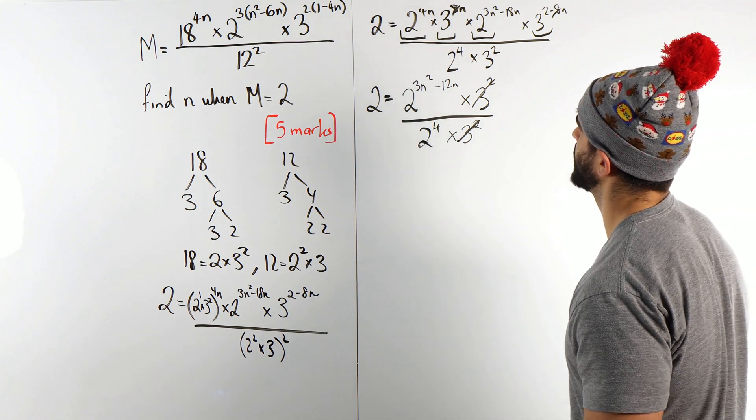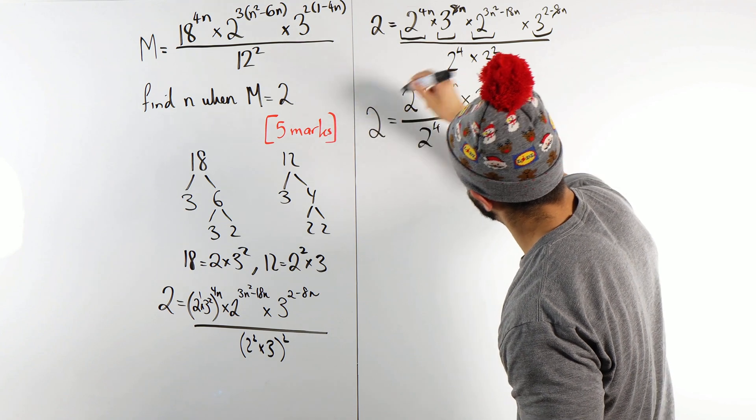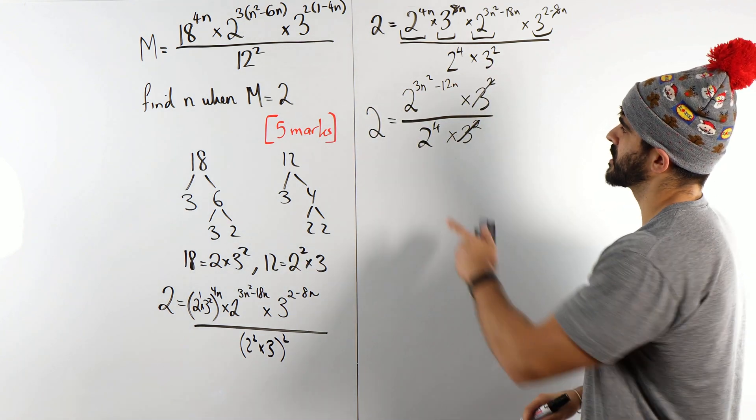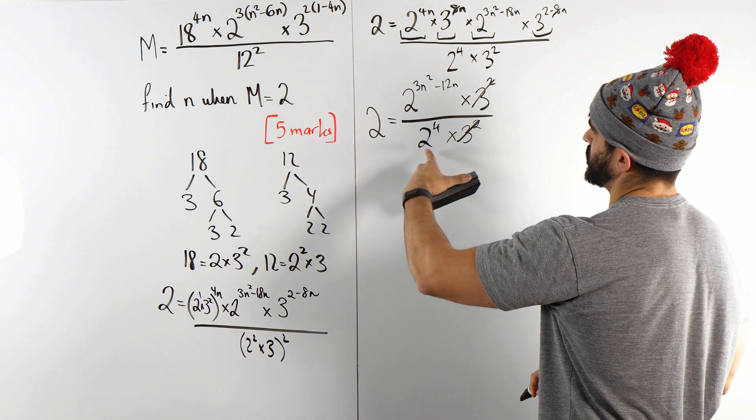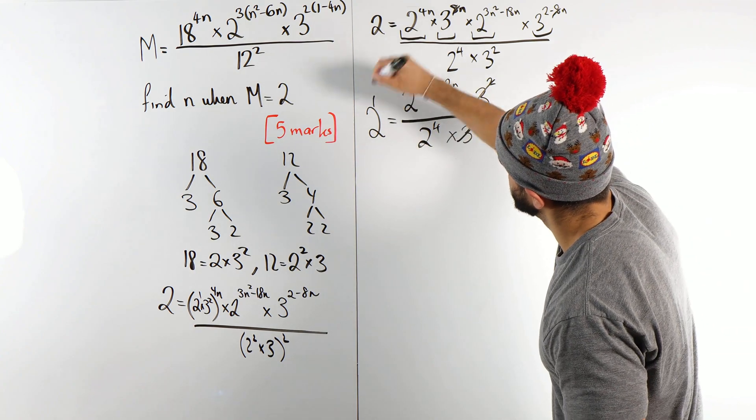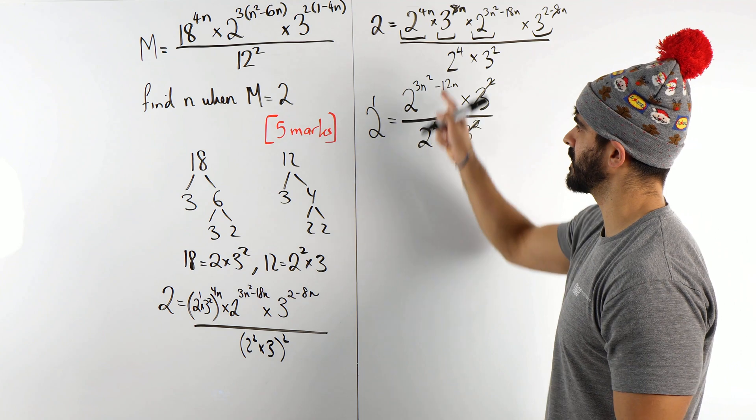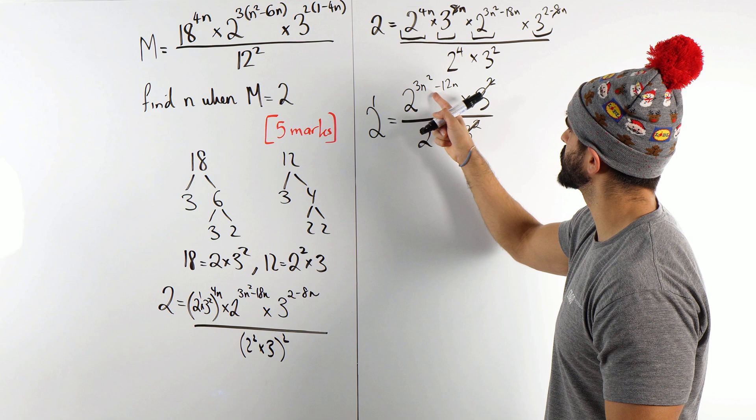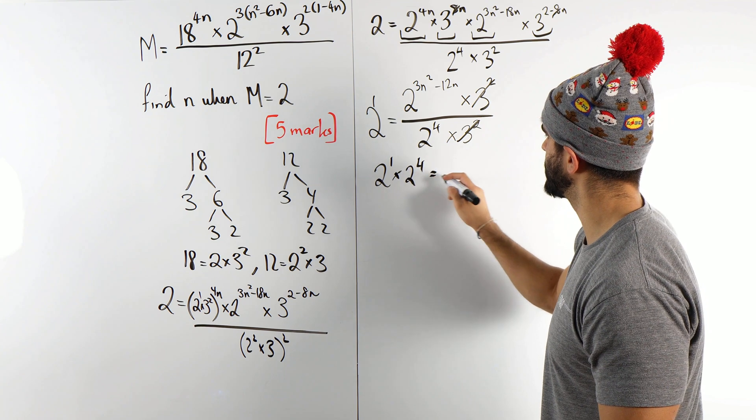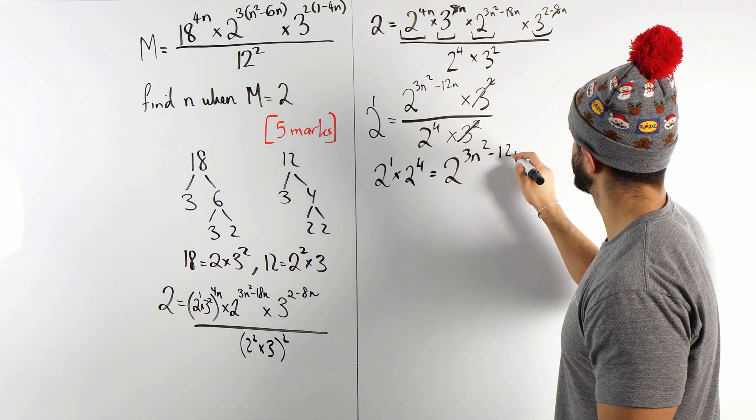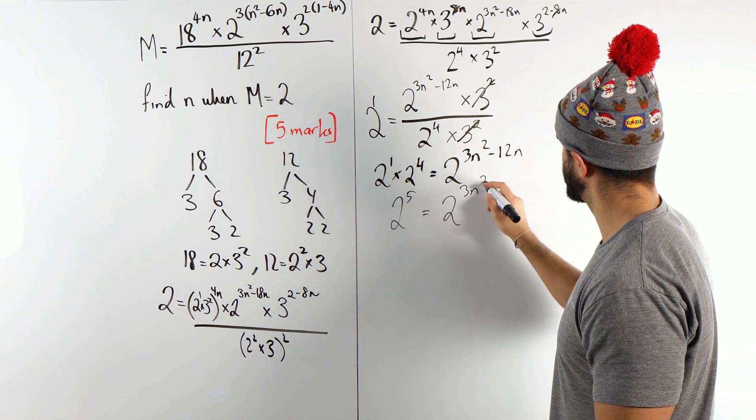What are we left with? Now, what some students might do here is they might multiply through by 2 to the power of 4. If you multiply these together, you would get 2 to the power of 4 times 2 to the power of 1, which you add the powers. The other way you could have done is you could have divided these and then subtract the powers. You could just have 3n squared minus 12n minus 4. But I think a lot of students here, they would just multiply through by the denominator. We're going to add those powers. 2 to the power of 5 is 2 to the power of 3n squared minus 12n.